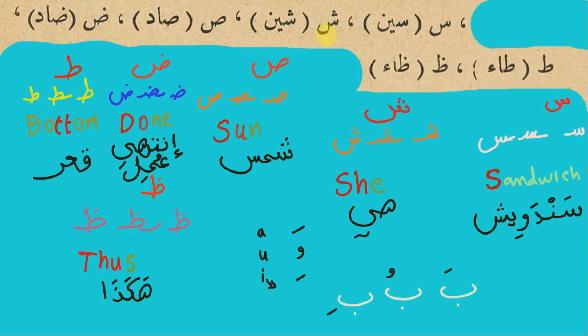The second one is SHA. Notice the difference between the two — just the dots on top here, three dots: SHA. Then the SA.